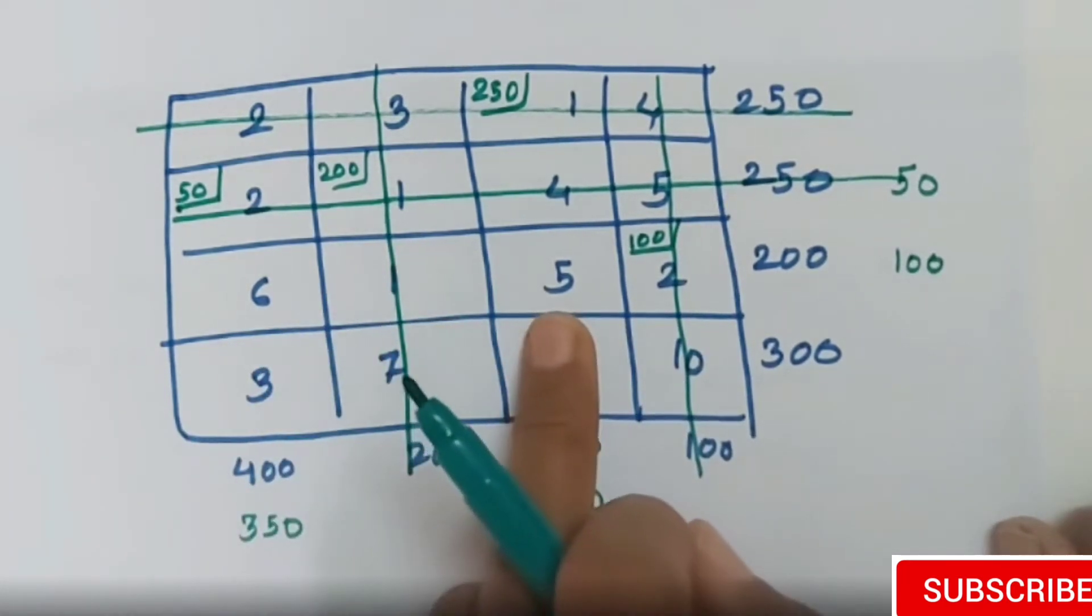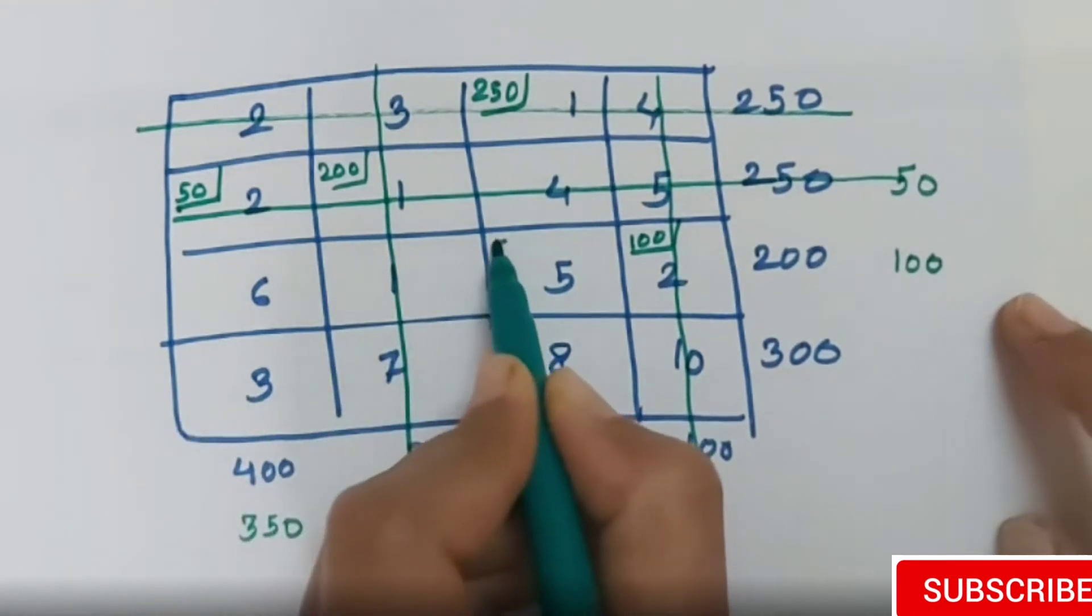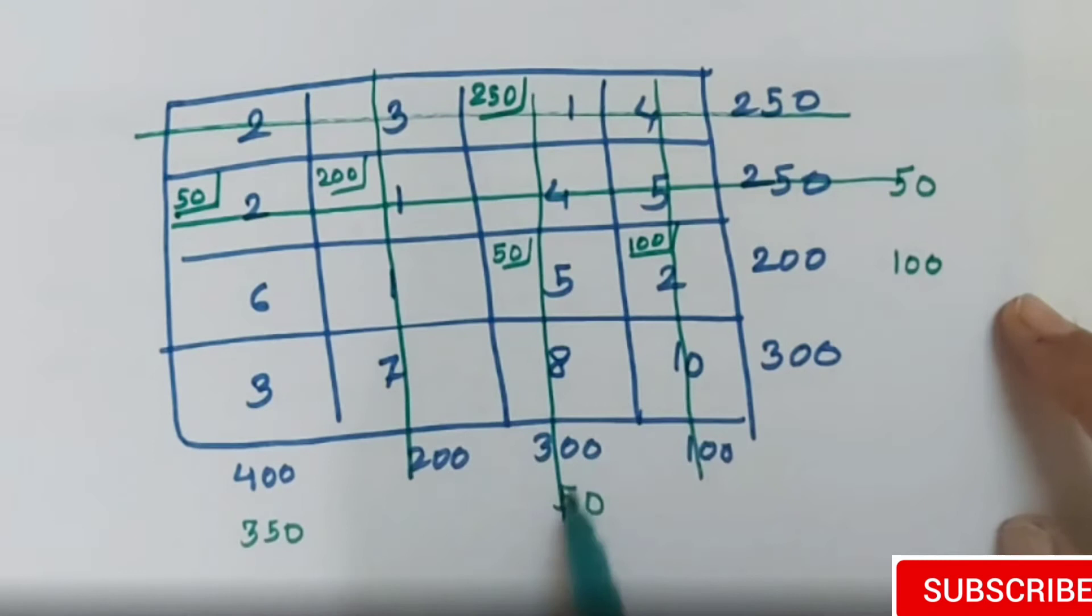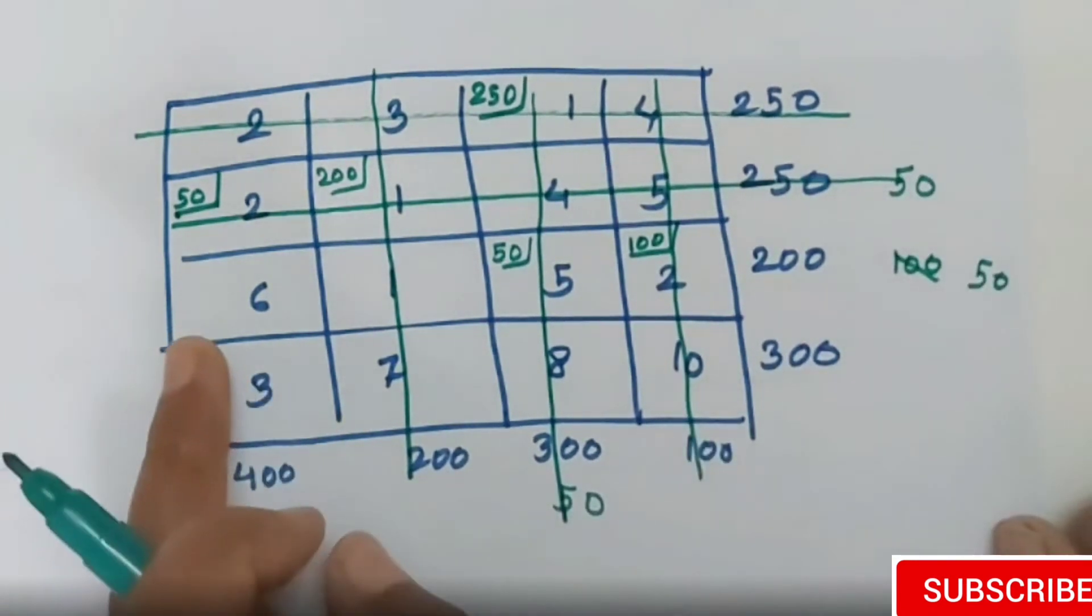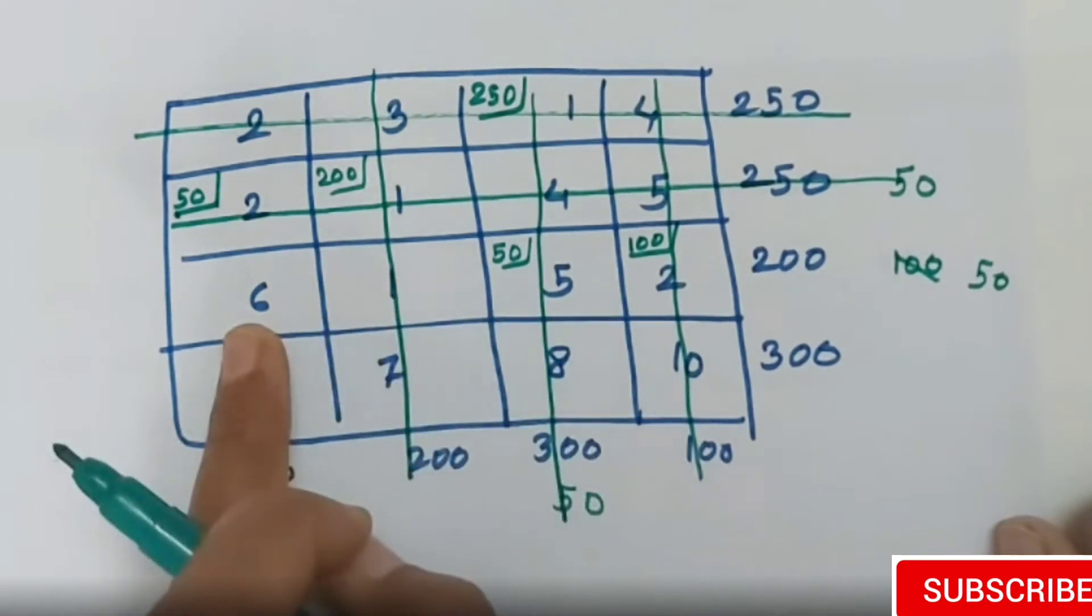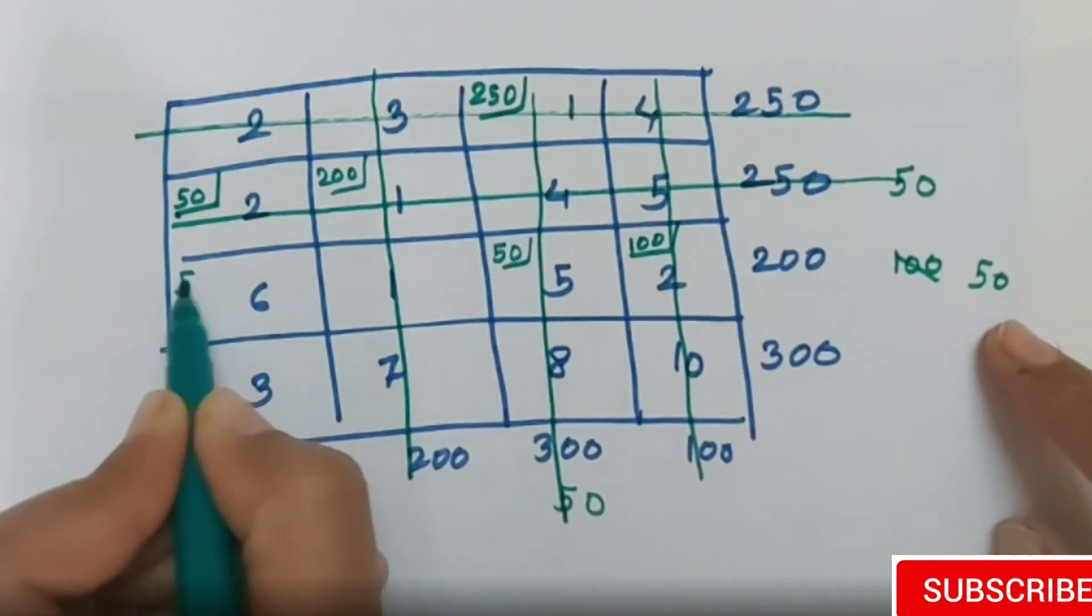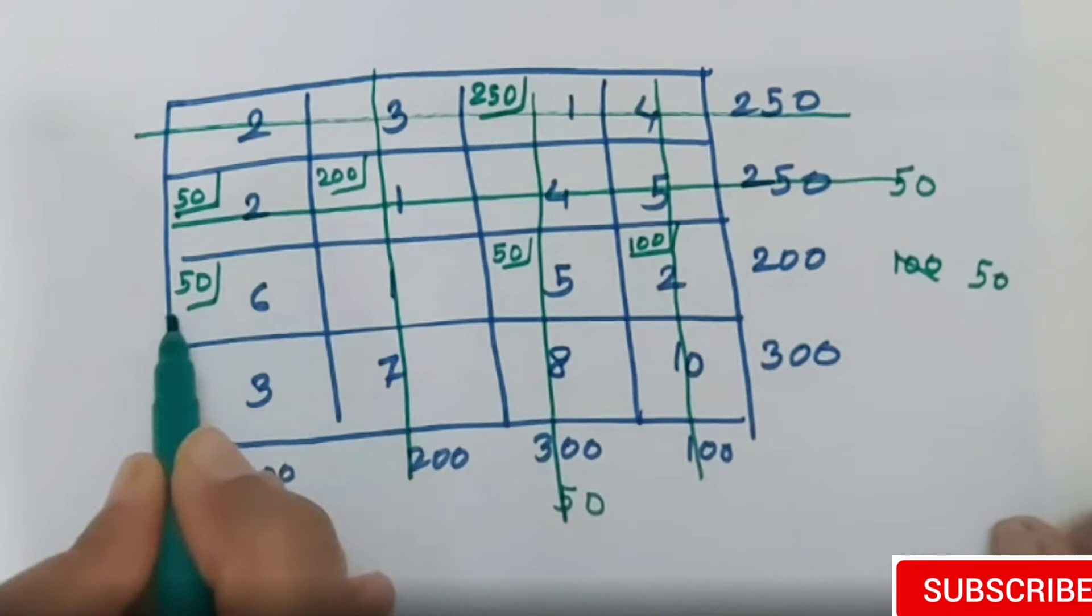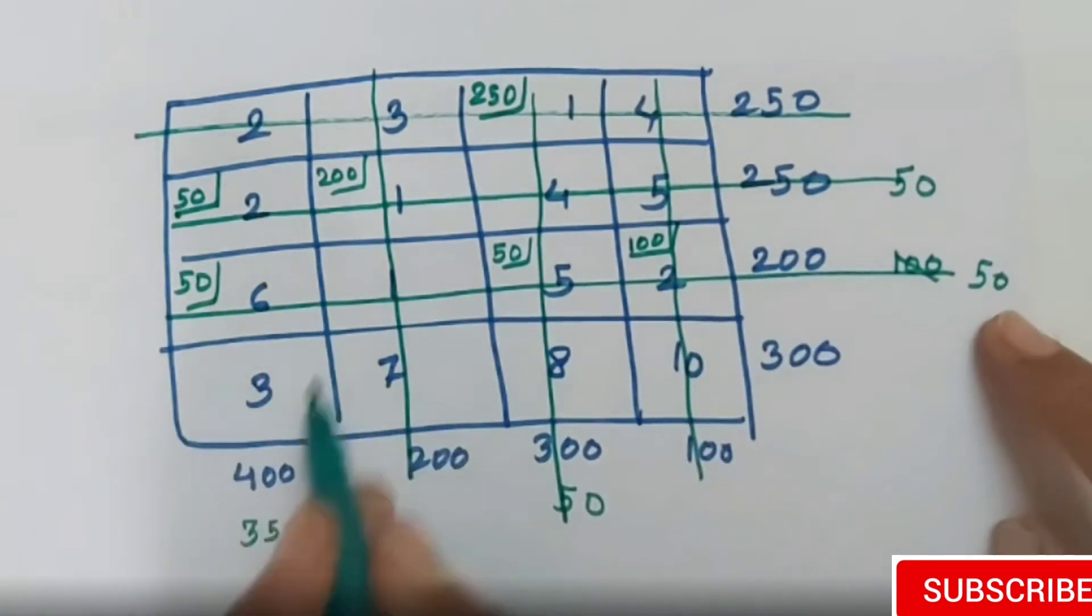Next minimum value is 5, corresponding assign minimum is 50, so 50 assigned. Again, the column is hold. Now we check this column or row, since this row is not completely cancelled. Next minimum value 6 corresponding assign minimum value is 50. This row is now cancelled.